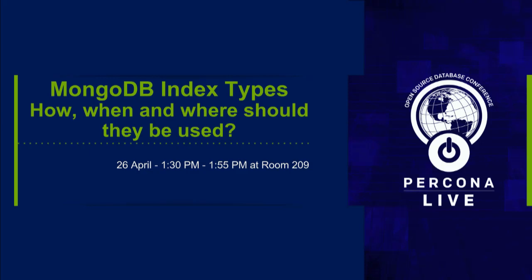We have more than 12 different index types in MongoDB, and it's important to know which one to use day by day. Quick question: who is using MongoDB in production here, like a production environment?